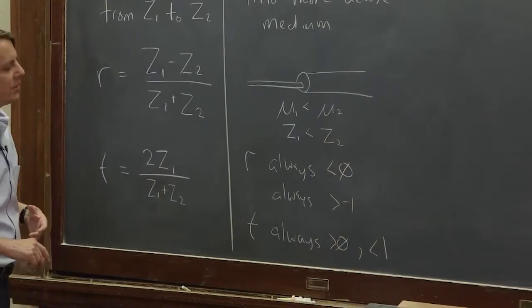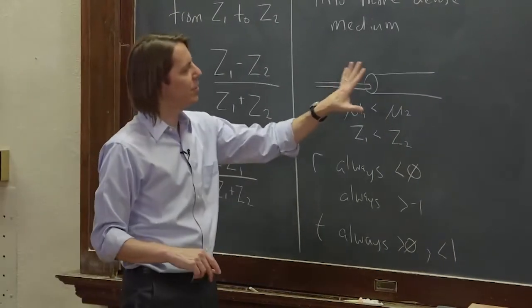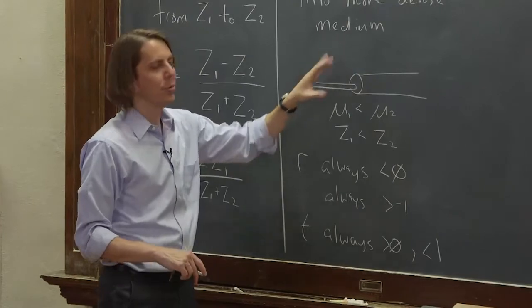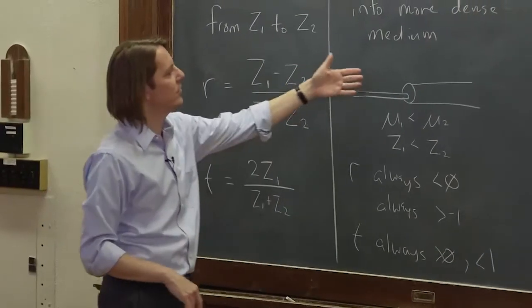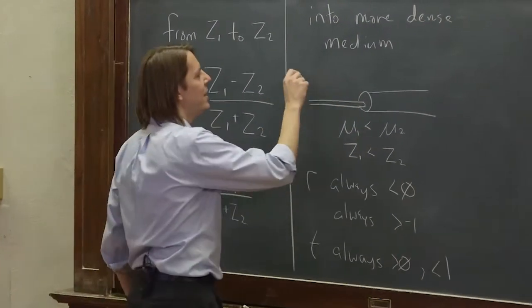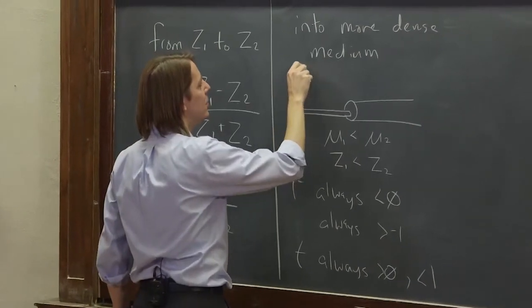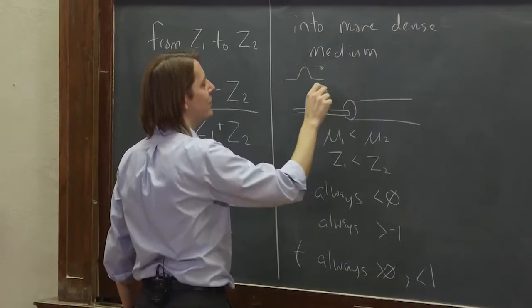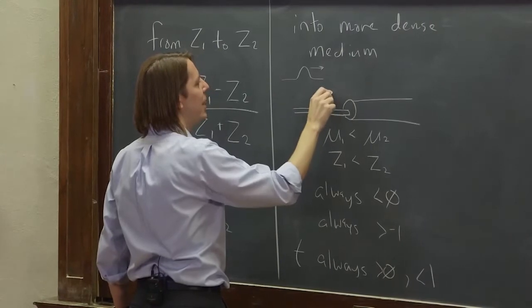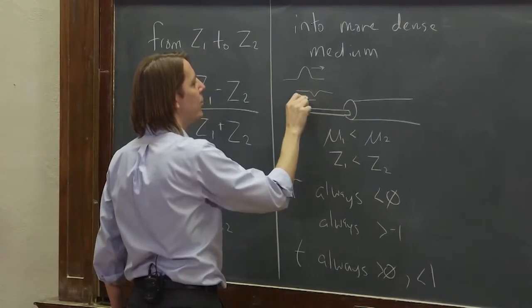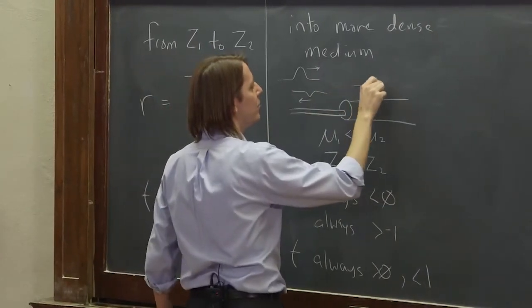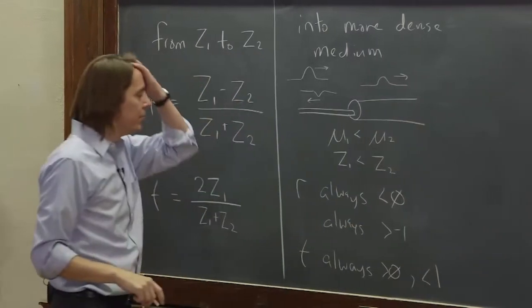So you'll always get a pulse, positive and upright, but always smaller than the original pulse, which you might expect considering it's going into a more dense medium. So the case then of going into a more dense medium kind of looks like this. It goes in, it bounces back with some smaller amplitude, and it goes in with some smaller amplitude, something like that.